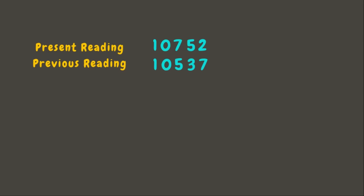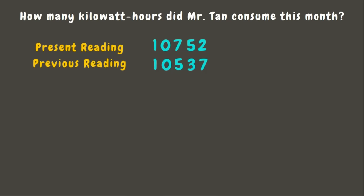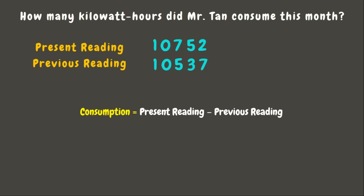The present electric meter reading is 10,752 kilowatt hours, while the previous reading is 10,537 kilowatt hours. To determine the electricity consumed, we need to subtract the previous reading from the present reading: 10,752 minus 10,537.